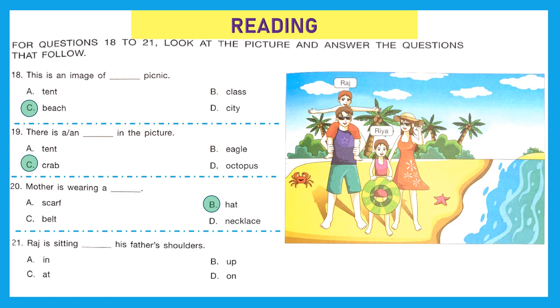Question 21, Raj is sitting dash his father's shoulders. Choose the right preposition. It is on, because on is used to state the surface of someone or something. Raj is sitting on his father's shoulders. Option D is the right answer.